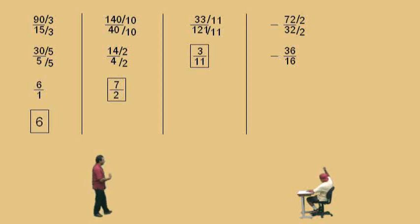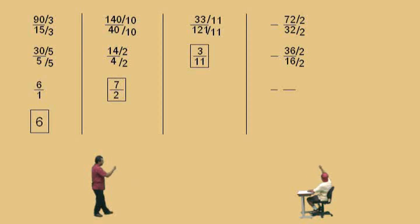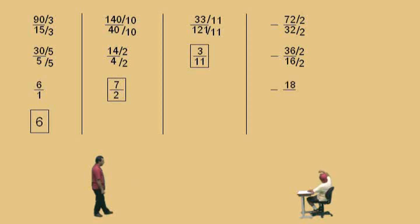Professor Perez: Now, again, we're going to divide by what, Charlie? Charlie: 2. Professor Perez: 2, that's right. But notice our answer is negative — we just keep our negative with us, because our answer is going to be negative. We're simply reducing the fraction. 36 divided by 2 is what, Charlie? Charlie: 18. Professor Perez: Okay. 16 divided by 2? Charlie: 8. Professor Perez: Is 8. Very nice there, Charlie.